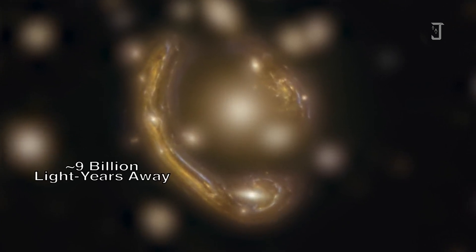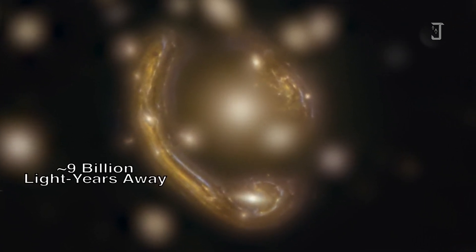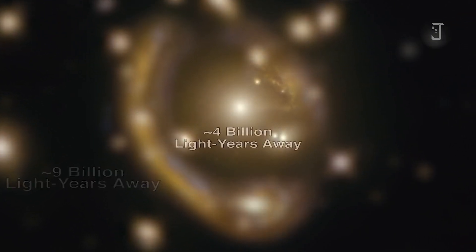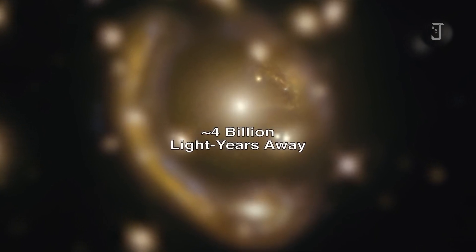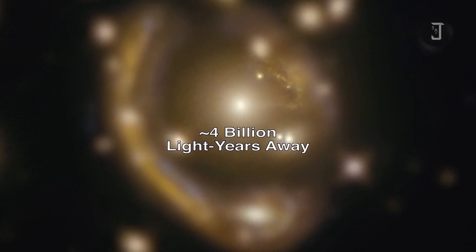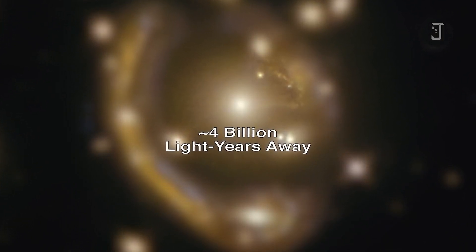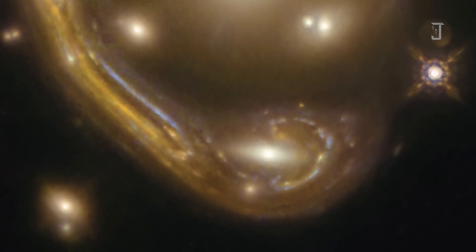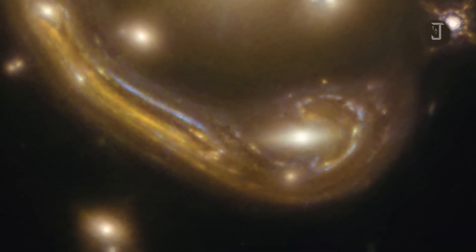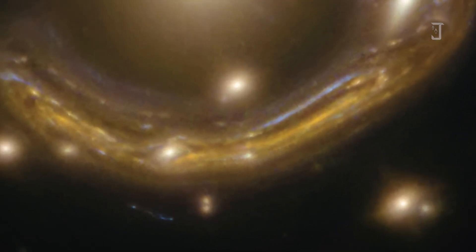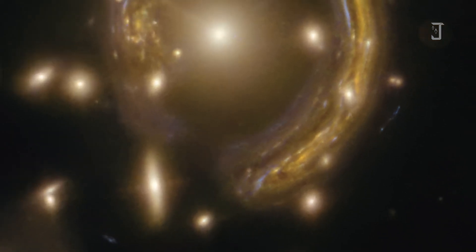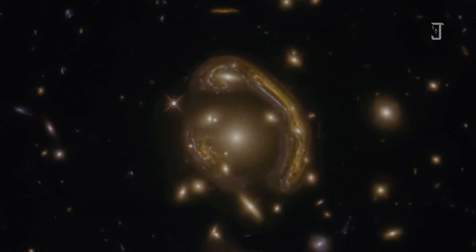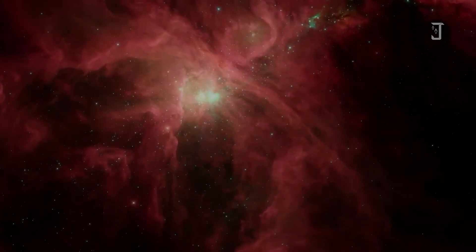As Einstein's theory of general relativity predicted, physicists have known that dark matter, which we cannot see, is what holds galaxies together. The distribution of dark matter surrounding galaxies or clusters of galaxies has mass and gravity that can create the image of Einstein rings. But we still don't know exactly what type of elementary particle dark matter is.